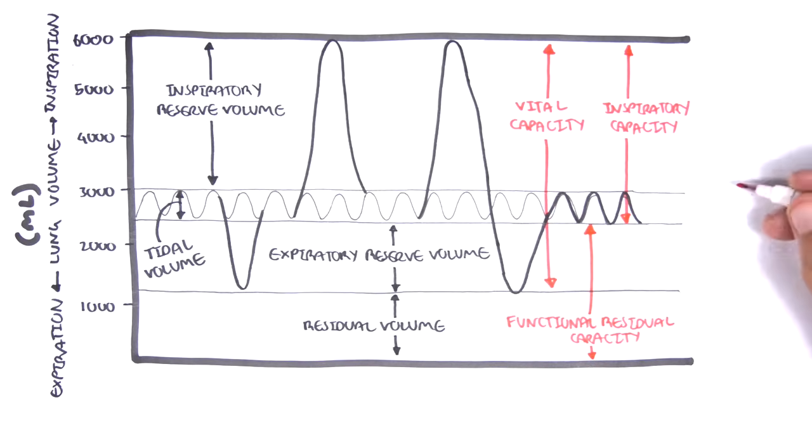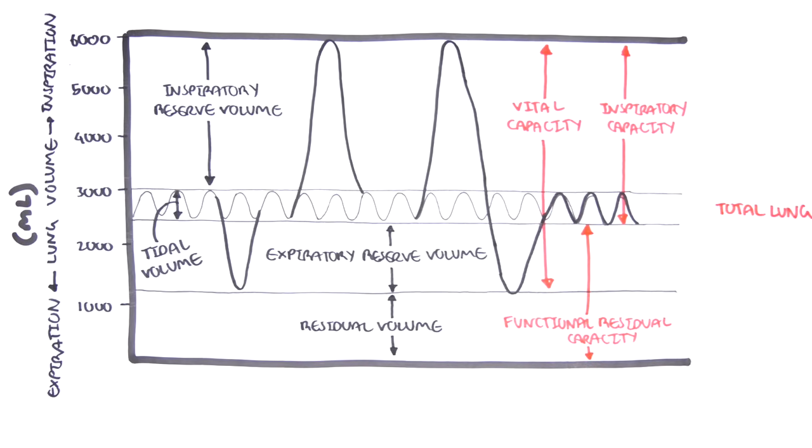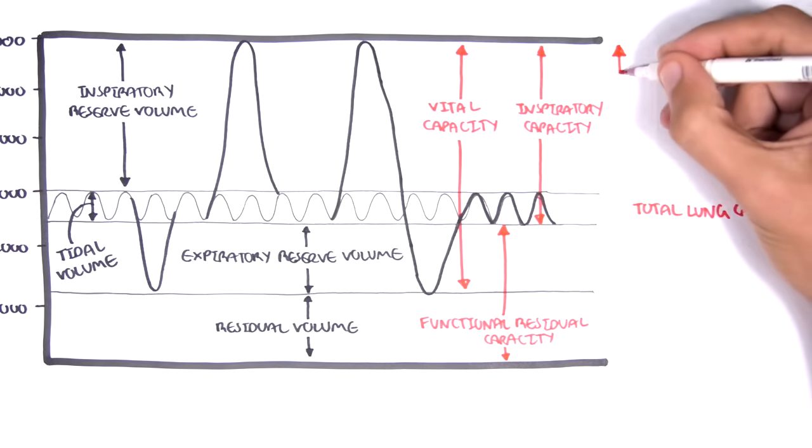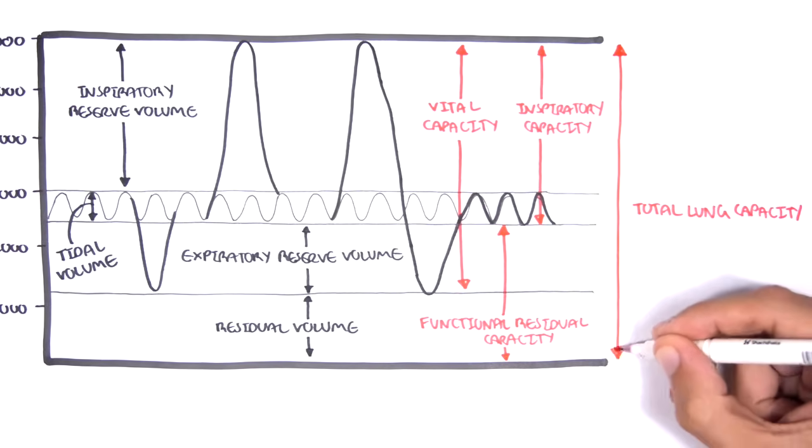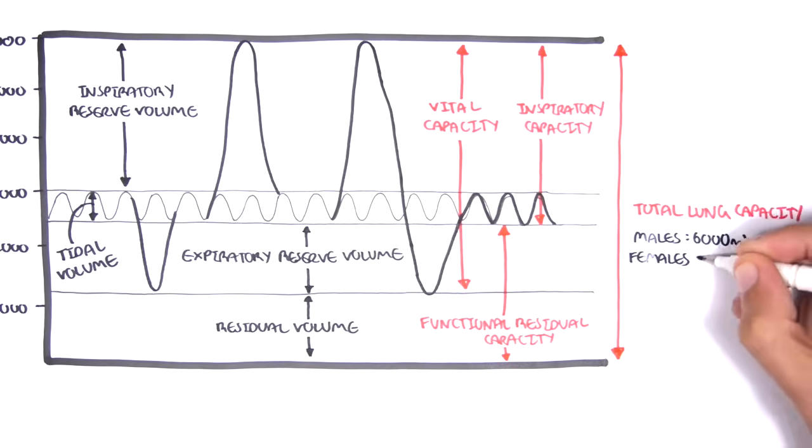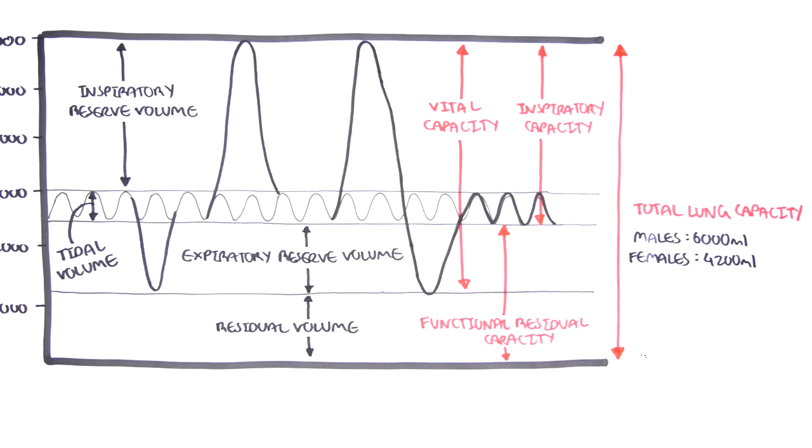Finally, the fourth lung capacity that we have already talked about is the sum of all the lung volumes, essentially. And this is the total lung capacity. Again, in the males, the total lung capacity is about 6 liters, and in females, about 4.2 liters. But different textbooks say different things.